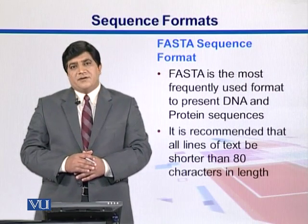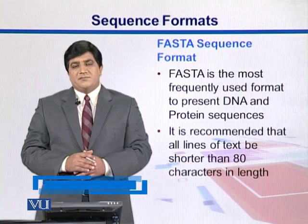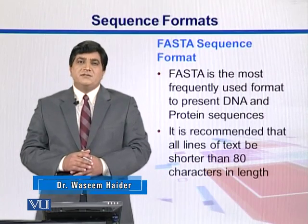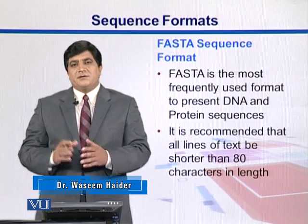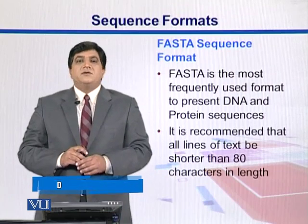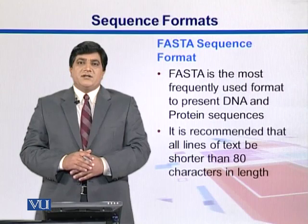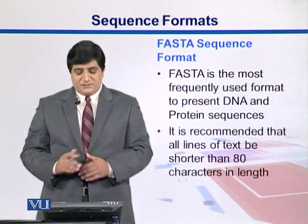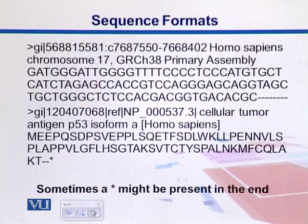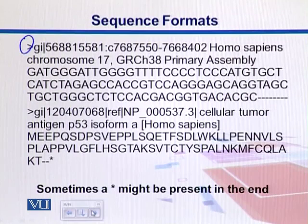FASTA is the most recognized and widely distributed format. In FASTA, sequences are preceded by a greater-than sign, and below that is the actual sequence. The length of the sequence per line should be less than 80 characters — generally around 60 characters. Here is the FASTA format from a DNA example; at the top we see it starts with the greater-than sign. GI stands for gene identification.